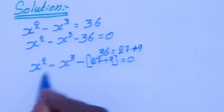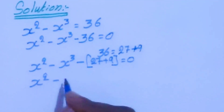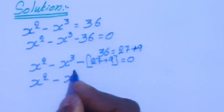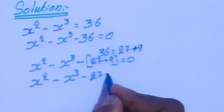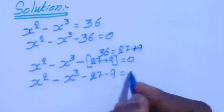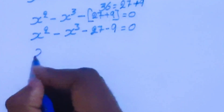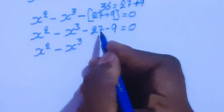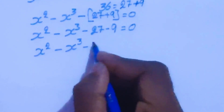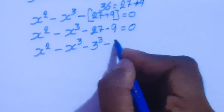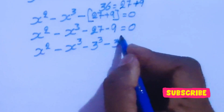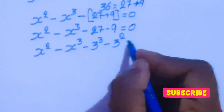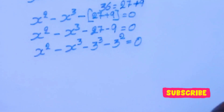Now we are multiplying this minus here. So x squared minus x cubed minus 27 minus 9 equal to 0. Now x cubed — this 27 can be written as 3 cubed, and minus 9 can be written as 3 squared equal to 0.